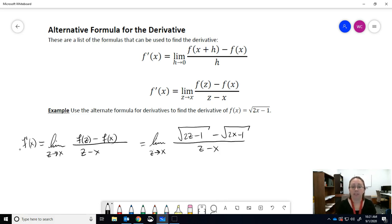So all I did was take my function, plug in z to get f of z, and then take the original function f of x and plug that into my formula. On the bottom, z and x are still z and x, because we're letting them approach each other once we take the limit.